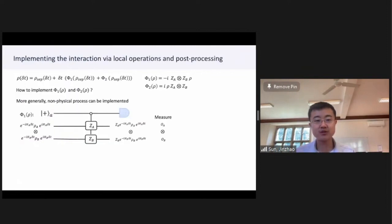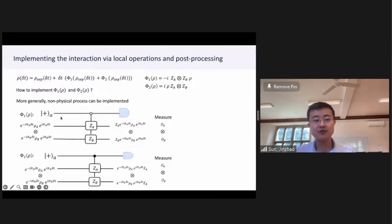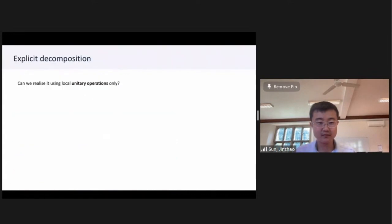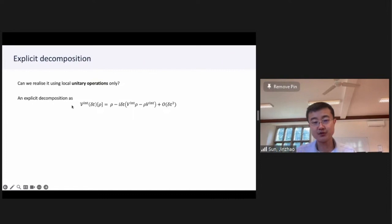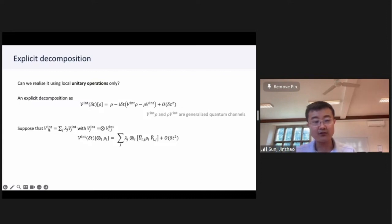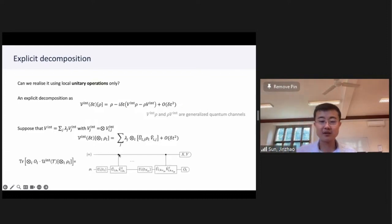We can use such a circuit to measure it, and the first party and second party share a similar circuit structure. We can measure the circuits separately to reproduce the joint measurement outcome. In general, we can consider an explicit decomposition using a first-order expansion, where V0 are the generalized operations. Suppose the interaction is a linear combination — a sum over lambda_J of V_J. We can reproduce the joint evolution by acting on local subsystems, and the final result can be recovered by such a circuit.